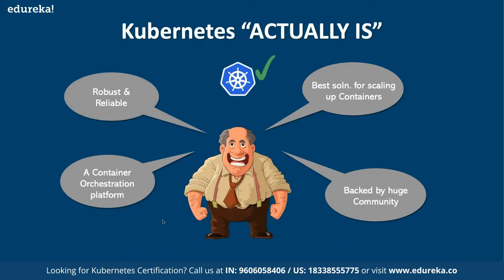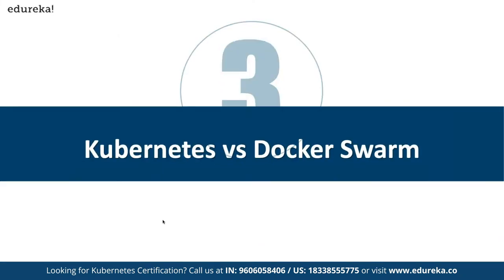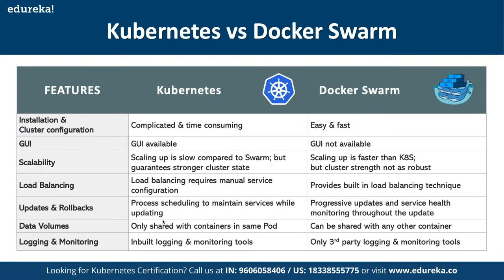What Kubernetes actually IS: it is the best solution for scaling up containers, backed by a huge community, and is a robust and reliable container orchestration platform compared to its counterparts, especially for large infrastructure. Though it is not easy to install — one of the most complicated systems to install — the complexities are surpassed by the advantages it offers. Docker Swarm, by comparison, has an easy and fast installation process.